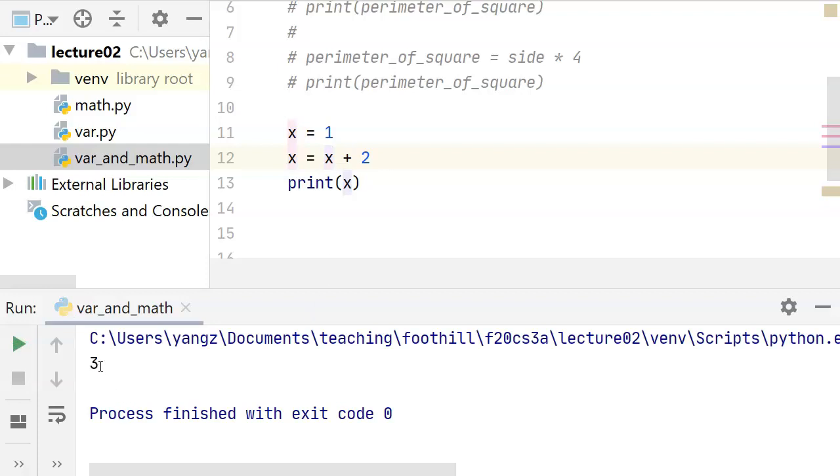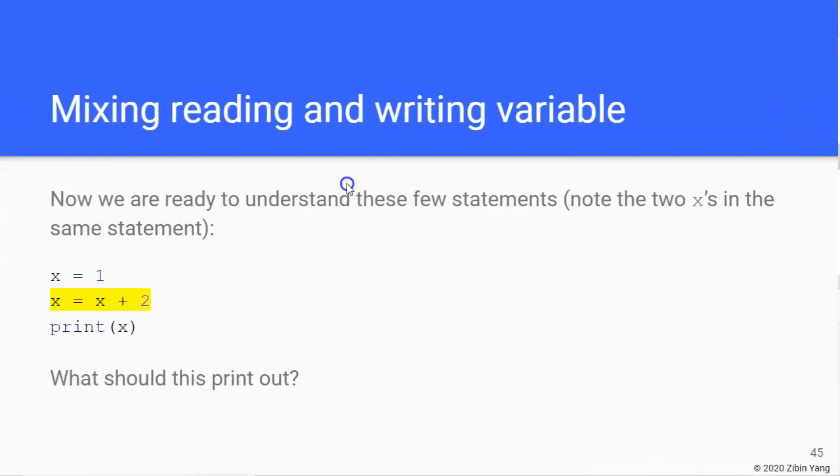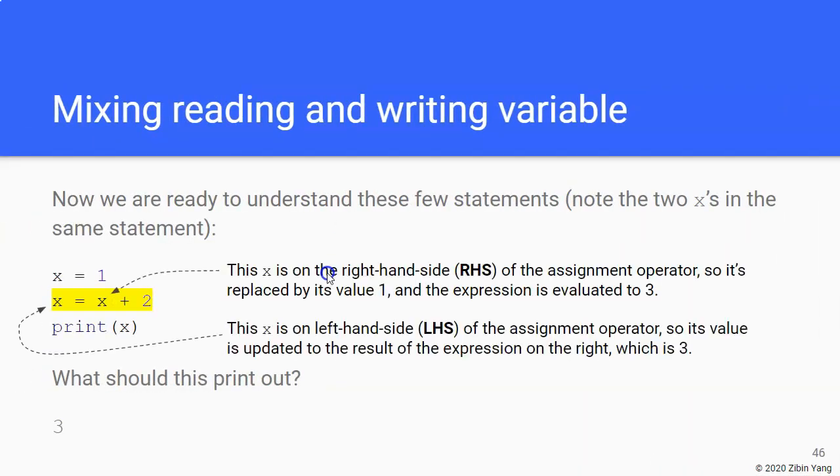All right, so it prints out 3. So x at this point has the value of 3. How did it come to be 3? Well, what happens is when there is an assignment operator and when there is an expression that is on the right side of the assignment operator, Python evaluates the expression first.